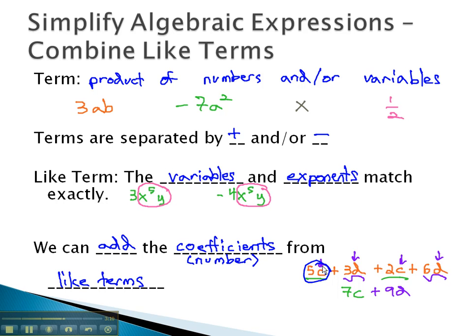Add the coefficients or the numbers from like terms. As you can see, I added the five and the two from the cats to get seven cats total. Add the numbers. Same with the dogs, three and six gave me the nine.